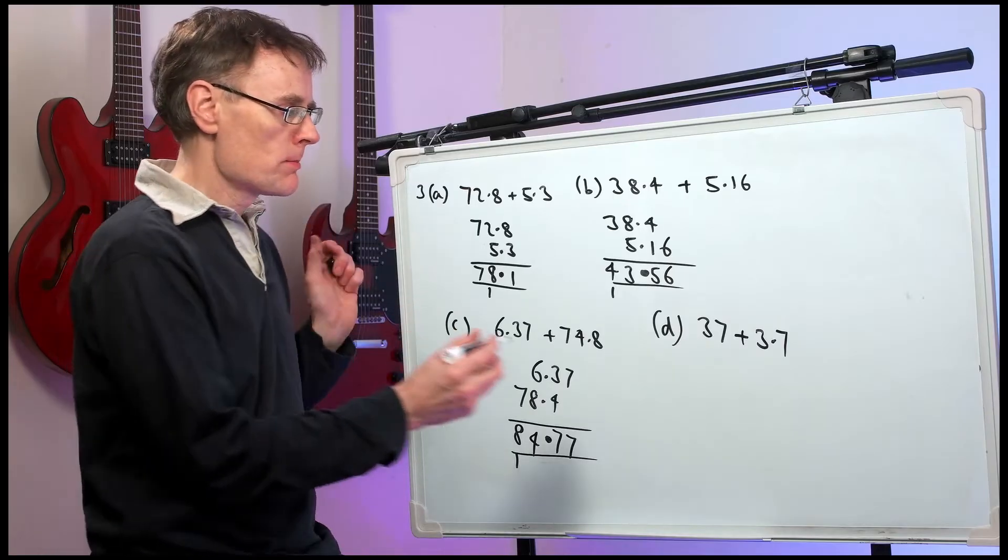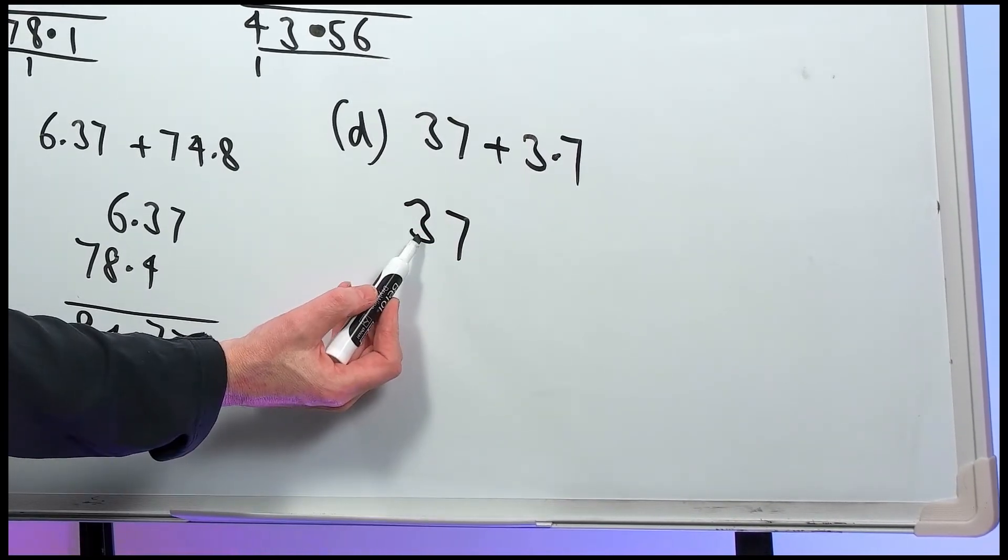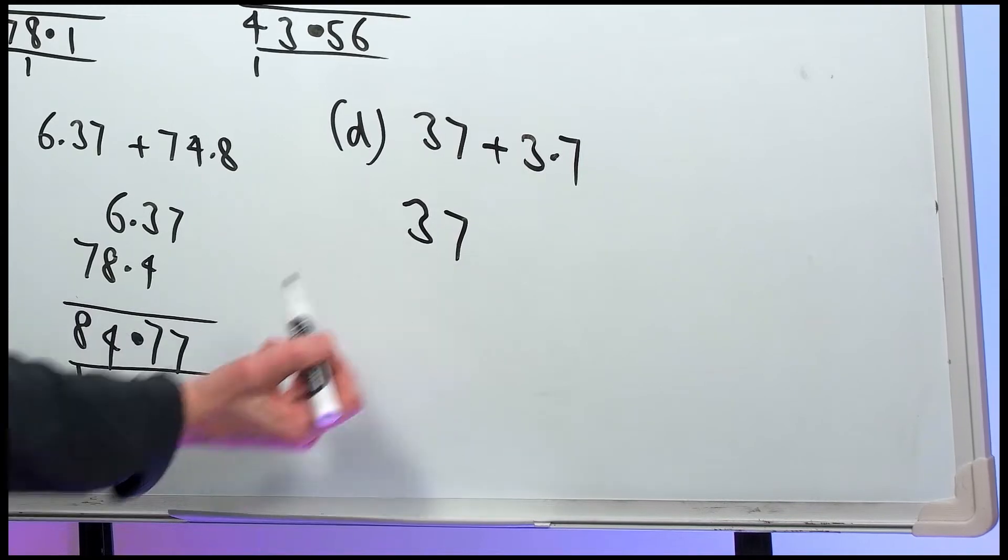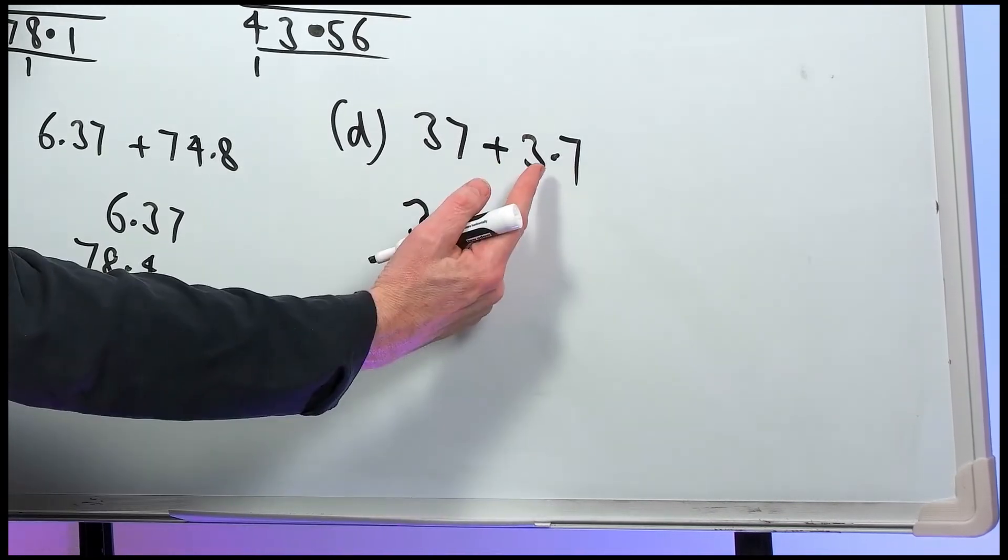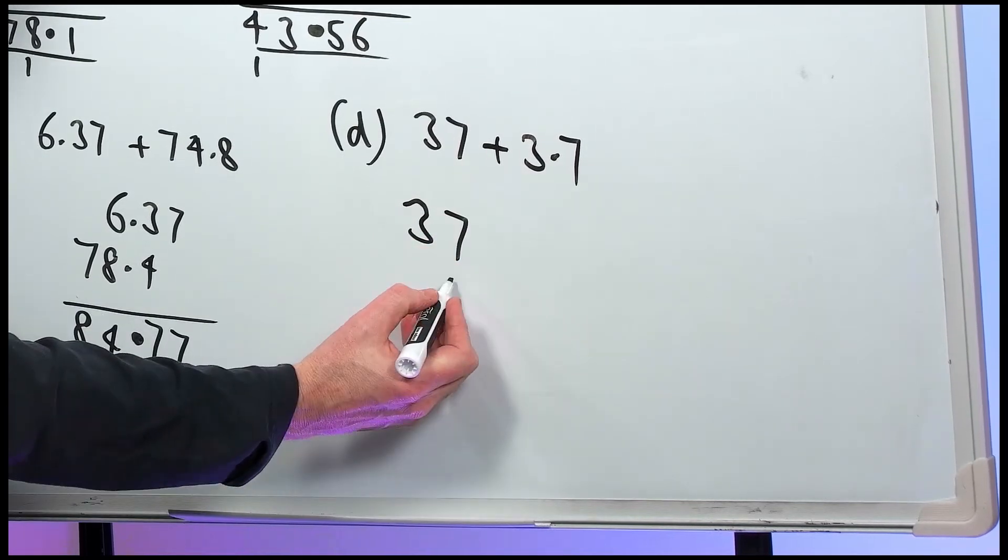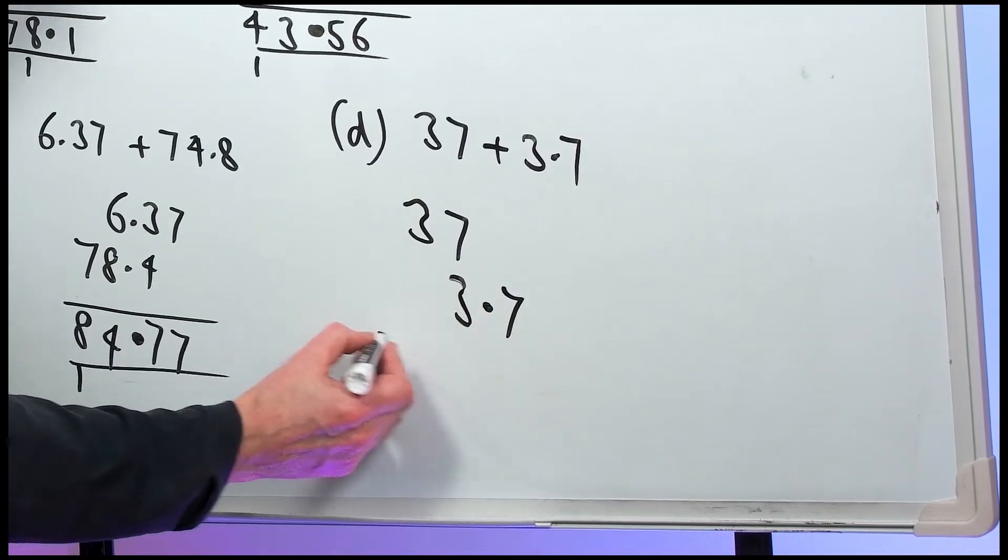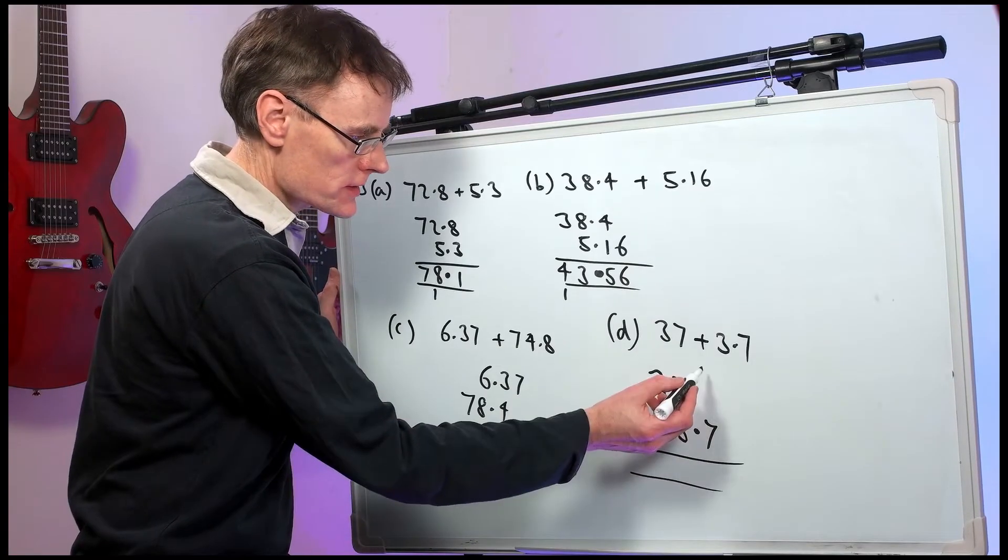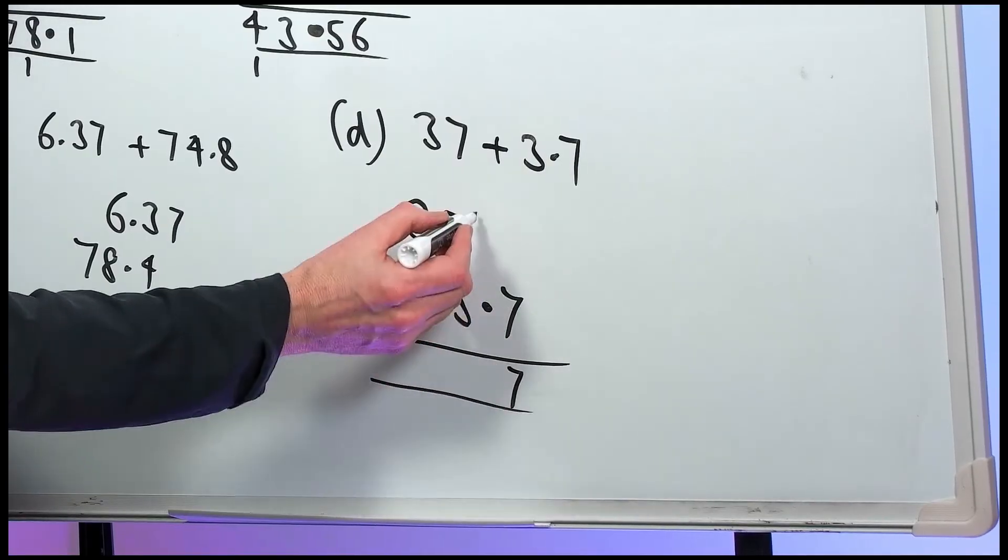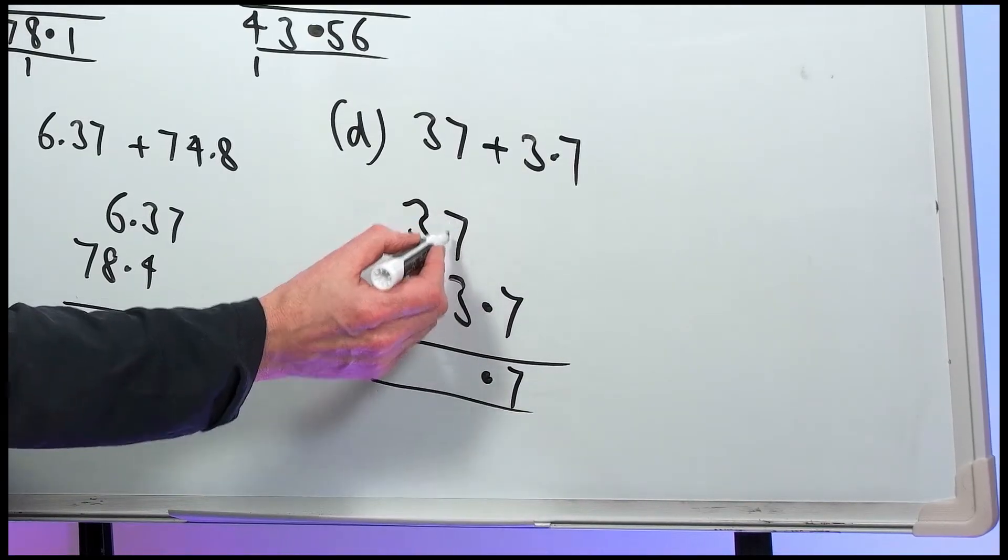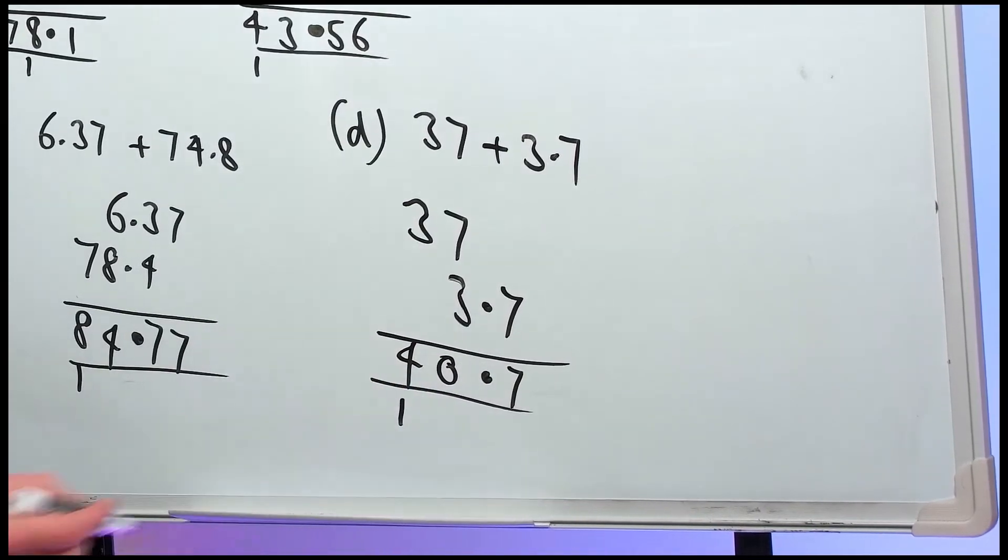Now, part D. We must line them up in the correct columns. 37. That's the tens column. 30. That's the units column. 7. 3.7. The 3 is friends with this 7 here. He's in the units column. 3.7. Now, we've gone into the tenths column here. Nothing plus 7 is 7. Decimal point lines up. Makes 10. So, we have 40.7.